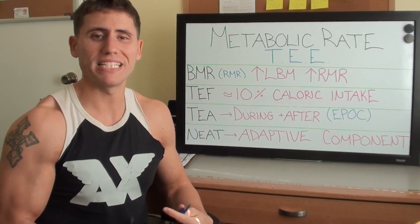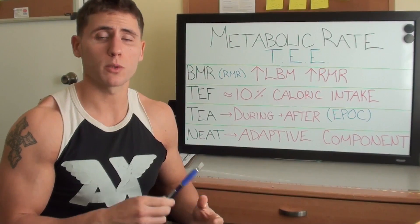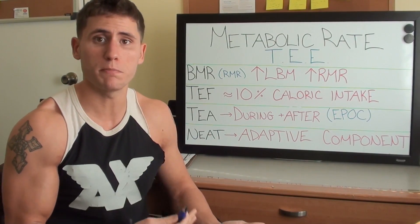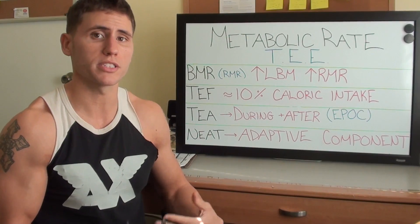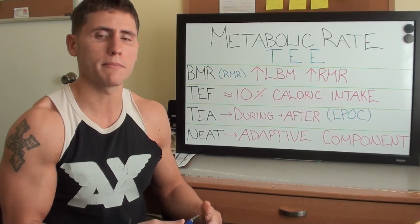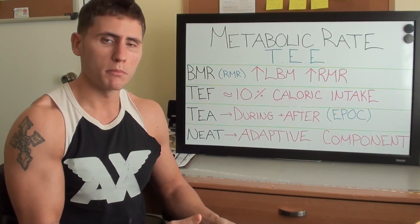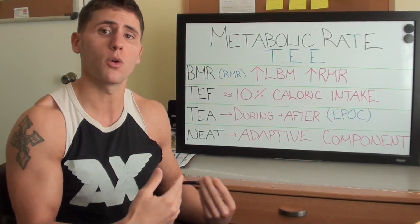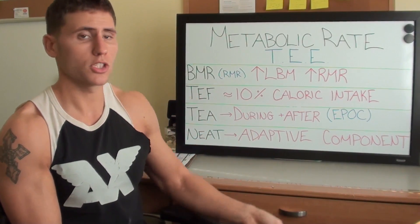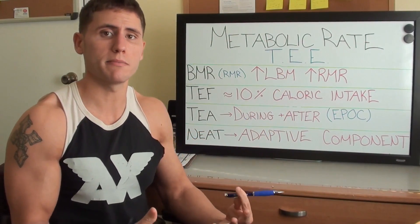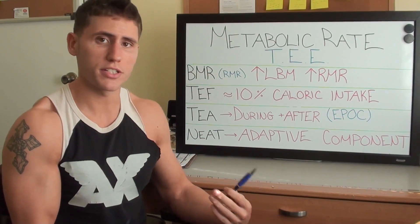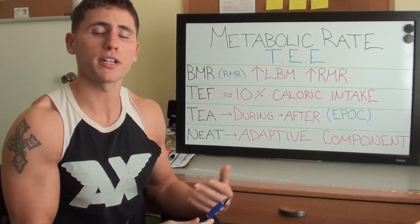First off, BMR — your basal metabolic rate — how many calories your body needs to keep you alive when you're comatose. When you're sleeping, your body is still functioning: your heart is beating, your organs are working, and all of this requires energy. So you are burning calories in your sleep. You also hear the term RMR, or resting metabolic rate. These numbers are not the same, but we typically use RMR because it's more practical as you're awake. There is some correlation between your lean body mass and your resting metabolic rate — the higher your LBM, typically the higher your RMR — with other variables such as gender and genetics also playing a role.